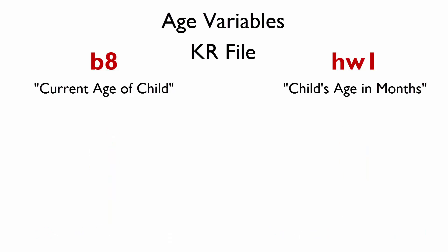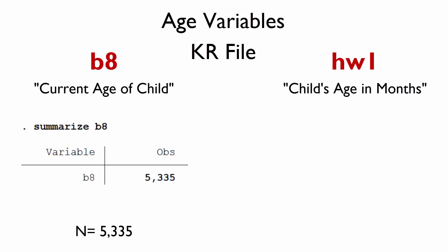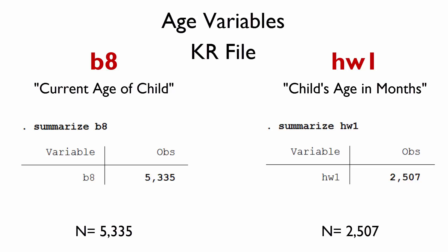However, using the data from the DHS model dataset as an example, we see that in the KR file, the variable B8 has a total number of observations of 5,335 children, while the number of observations in the variable HW1 is 2,507 children. Why might the variable HW1 have around 2,800 fewer children than variable B8 when they are, in theory, both examining the age of children in the dataset?